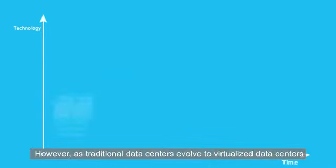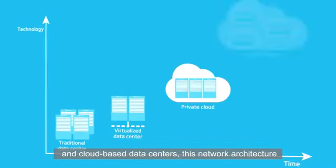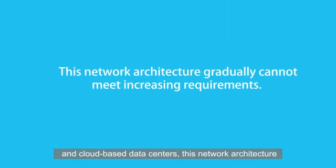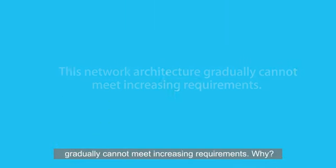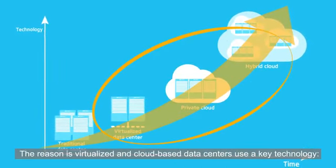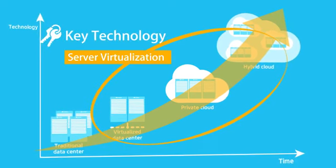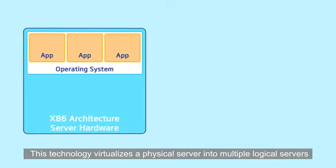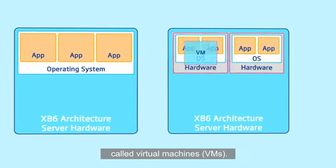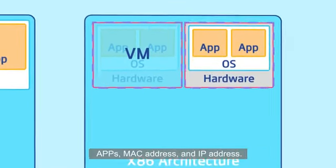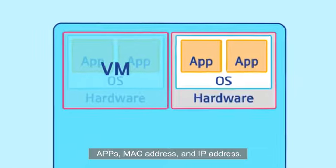However, as traditional data centres evolve into virtualised data centres and cloud-based data centres, this network architecture gradually cannot meet increasing requirements. The reason is that virtualised and cloud-based data centres use a key technology: server virtualisation. This technology virtualises a physical server into multiple logical servers called virtual machines. Each VM runs independently and has its own OS, apps, MAC address and IP address.